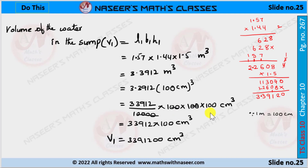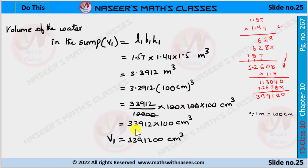So 1 cubic meter is written as 100 × 100 × 100 cubic centimeters. Here 3.3912 is written as 33,912 divided by 10,000. We cancel four zeros in the denominator and four zeros in the numerator, giving us 3,391,200 cubic centimeters.